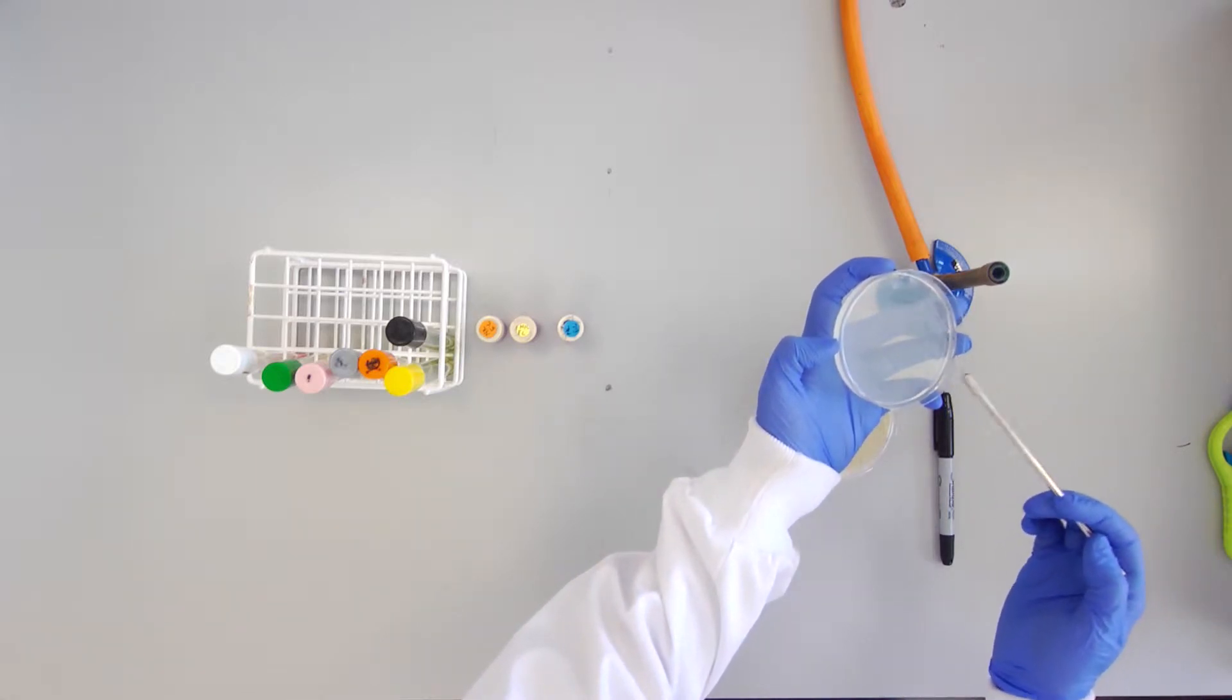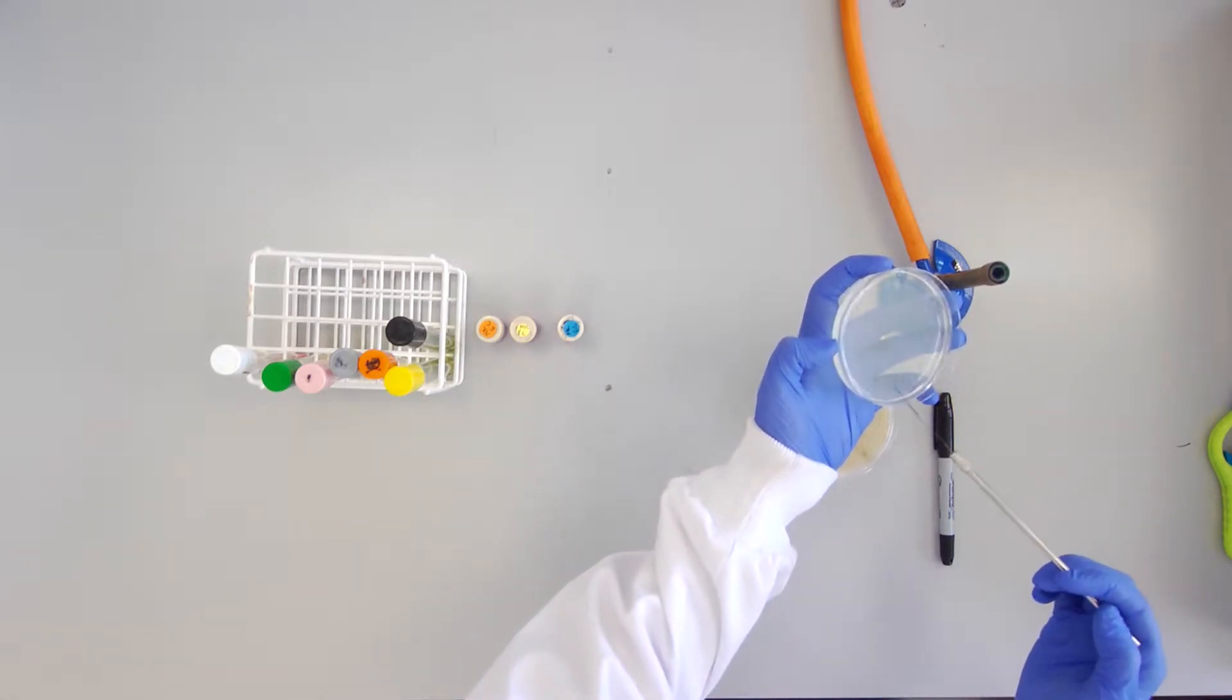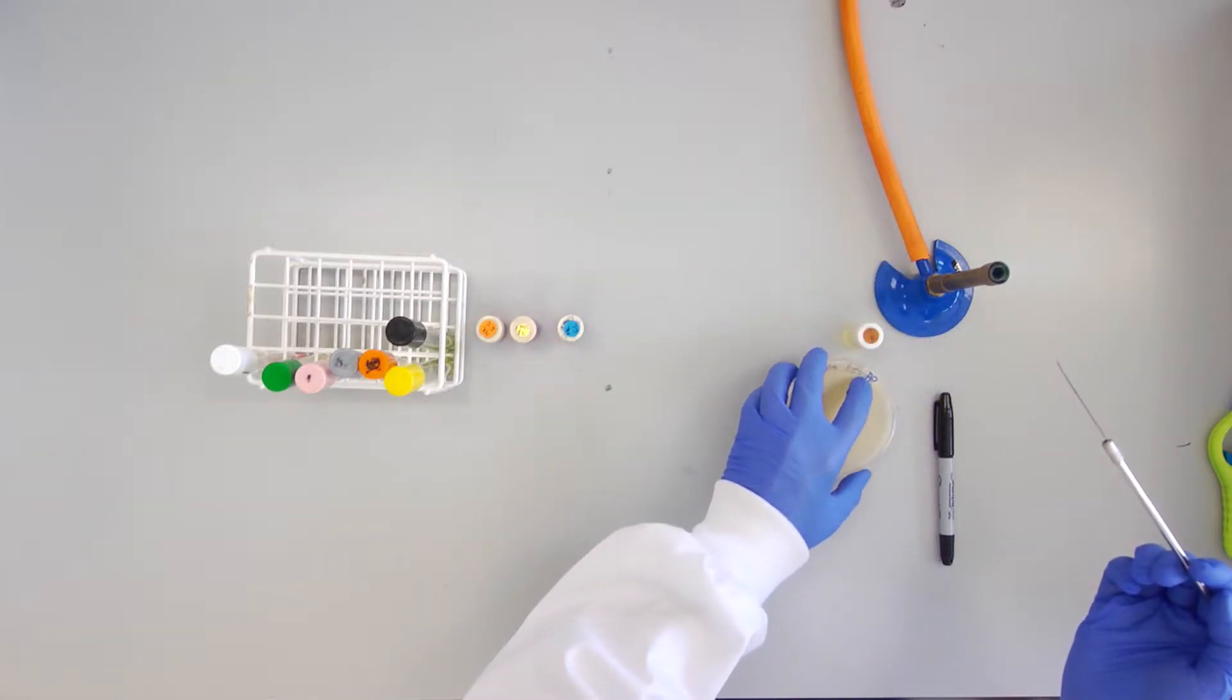Make a single zigzag streak with your bacteria on the phenolphthalein plate which is labelled PP.